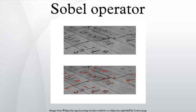It is named after Erwin Sobel, who presented the idea of an isotropic 3x3 image gradient operator at a talk at the Stanford Artificial Intelligence Project in 1968.